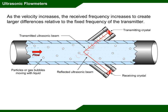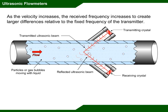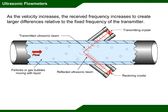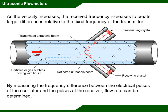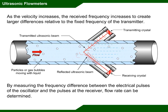As the velocity increases, the received frequency increases to create larger differences relative to the fixed frequency of the transmitter. Watch as we increase the velocity. By measuring the frequency difference between the electrical pulses of the oscillator and the pulses at the receiver, flow rate can be determined.